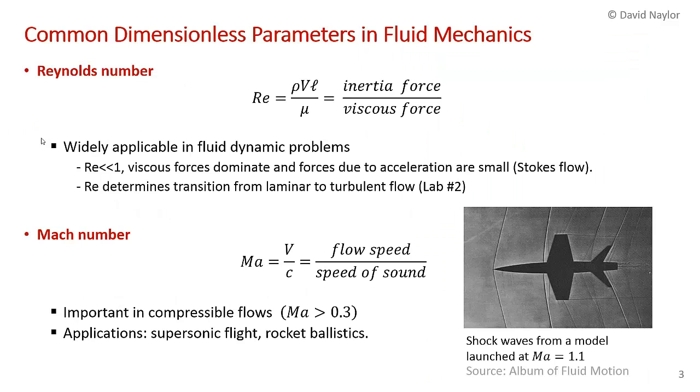So let's start with the Reynolds number. The Reynolds number can be written as rho V L over dynamic viscosity. L is some characteristic dimension, typically the pipe diameter. You can show that this is equal to the inertia force in the fluid divided by the viscous force. As I mentioned, it's widely applicable in fluid dynamics problems. Whenever you have a flowing fluid, the Reynolds number is important in determining the behavior in the flow.